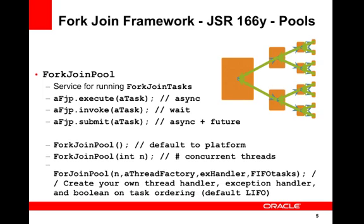The fork-join framework is one of the major new pieces in the Java 7 release. It is an implementation of the executor service interface that helps you take advantage of multiple processors. It's designed for work that can be broken into smaller pieces recursively, with the goal of using all available processing power to enhance your application's performance. The center of the fork-join framework is the ForkJoinPool class, an extension of the abstract executor service, which implements the core work-stealing algorithm and creates a pool of worker threads to execute fork-join tasks.